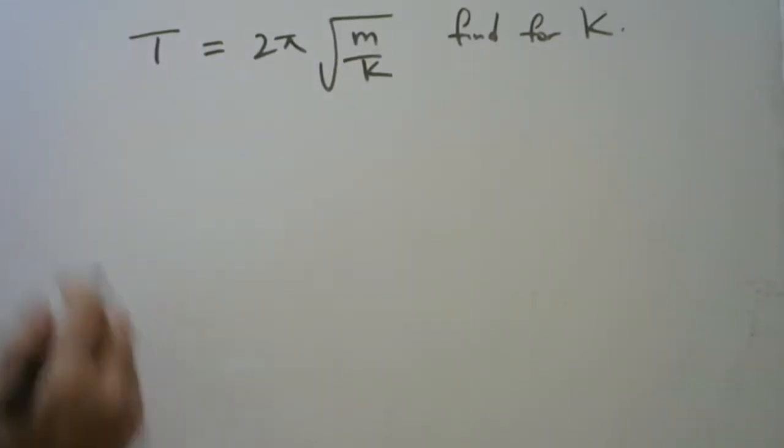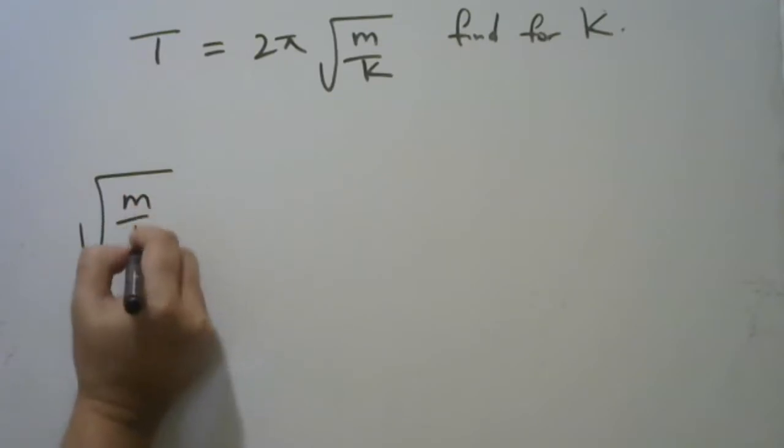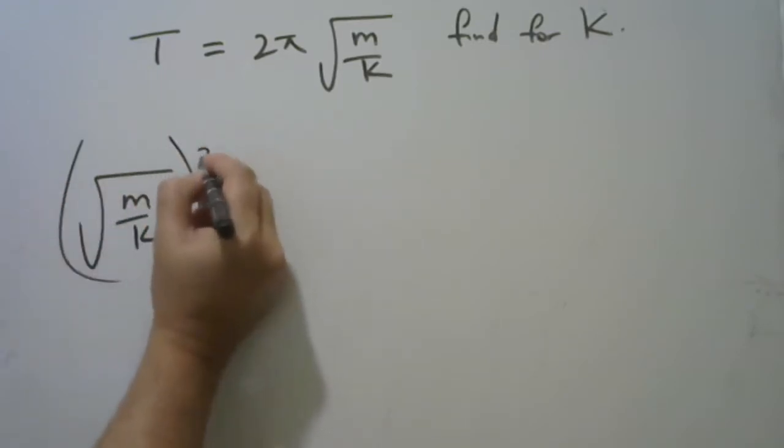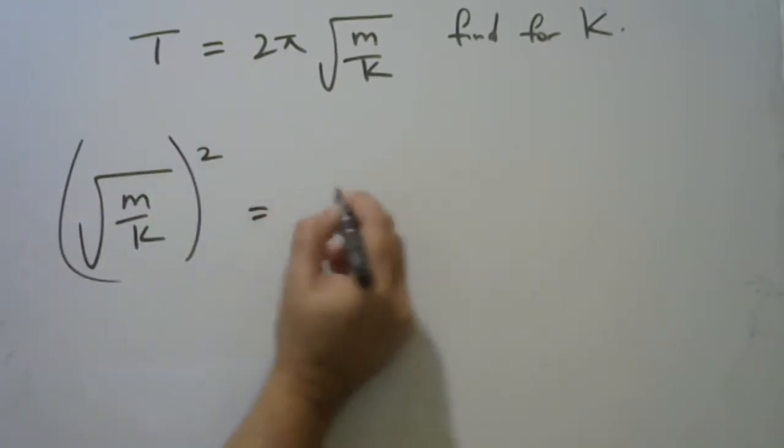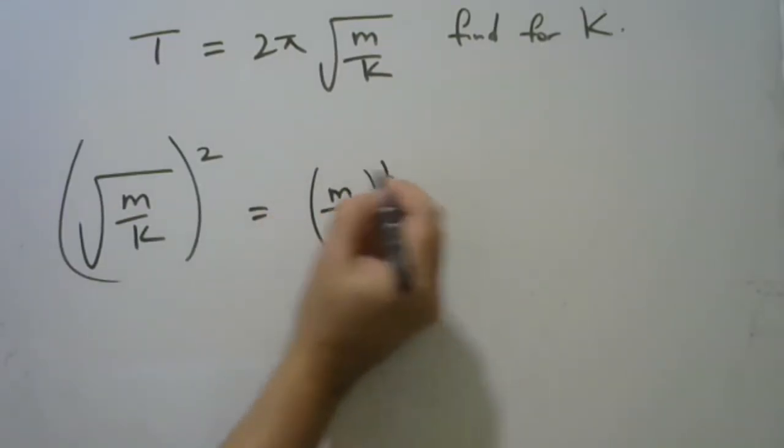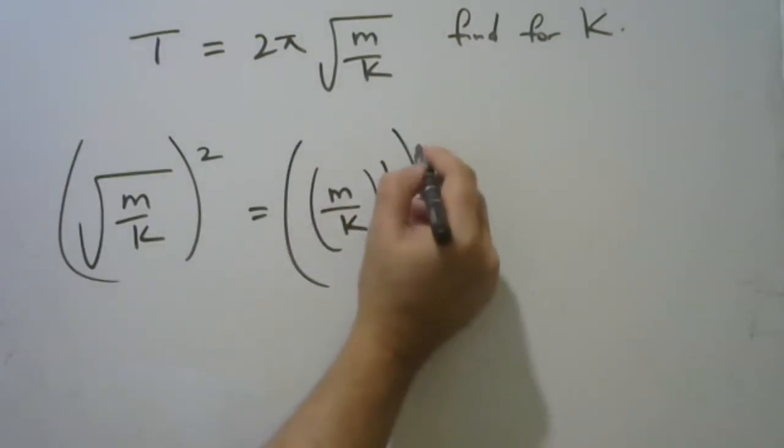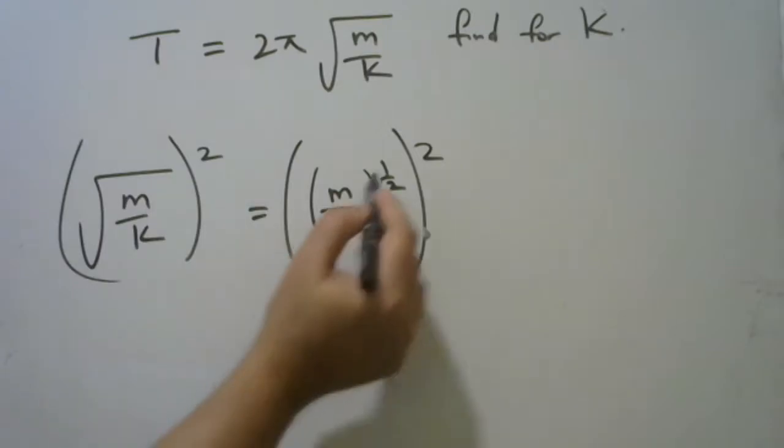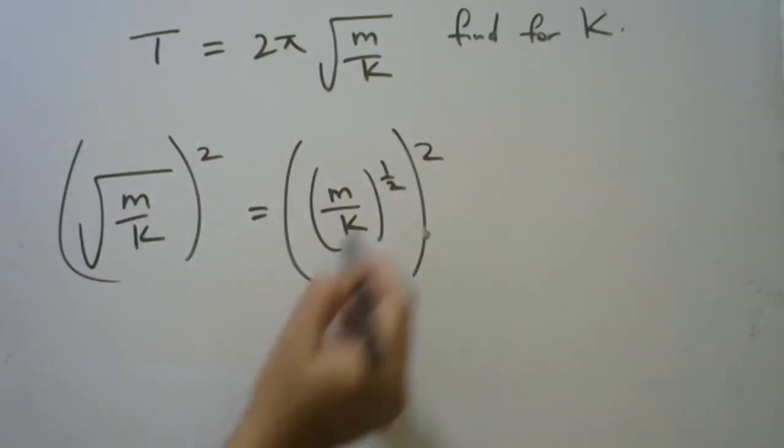I'm saying this. If you have the square root of m upon k squared, this is the same as saying m upon k to the half to the square, because the half here is indicative of the square root, and this here is the square.